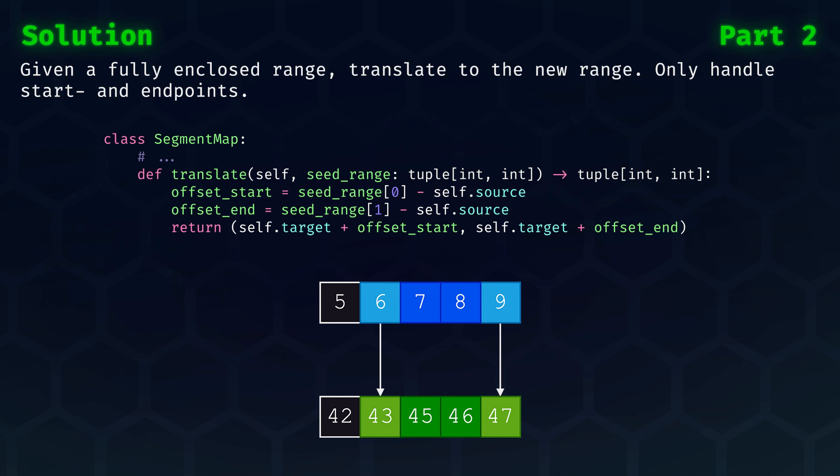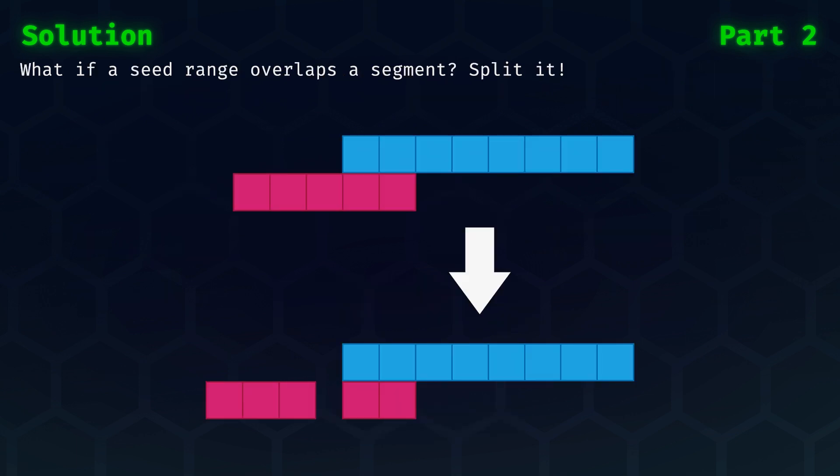But you might wonder, what if the assumption does not hold? What if a seed range overlaps with the edge of a segment? Well, we can simply solve this by splitting that seed range into a part that is fully inside the segment and one or two parts that are outside of it. Those parts outside of the segment can be processed separately. They might overlap with another segment.